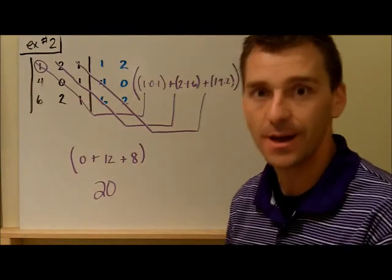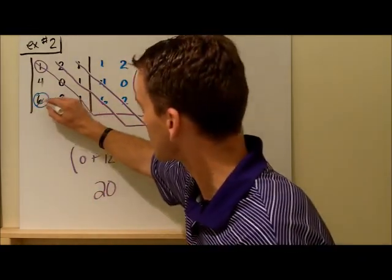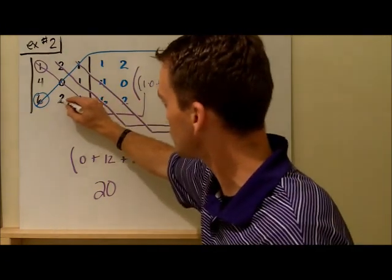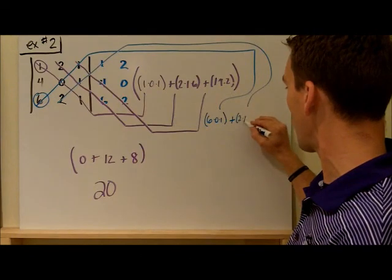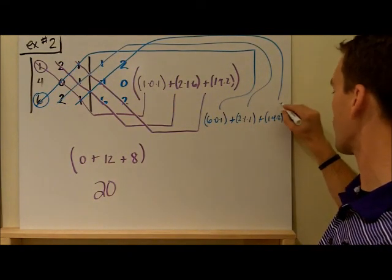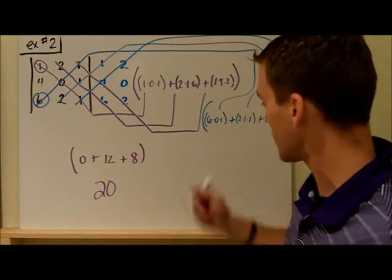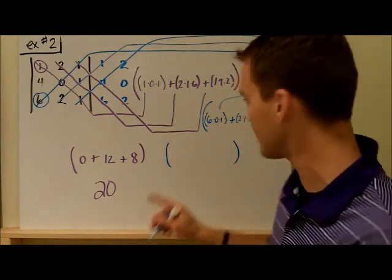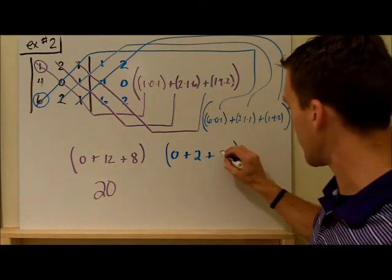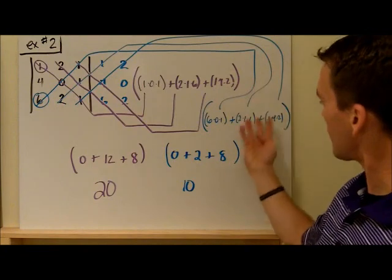Now I go into step three from the notes. I'm going to start at the bottom left and multiply uphill. So six times zero times one gives zero. Then two times one times one gives two. Then one times four times two gives eight. So the uphill parts combined: zero plus two plus eight gives me ten.